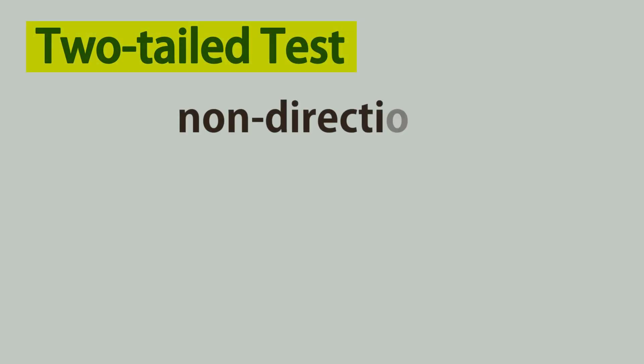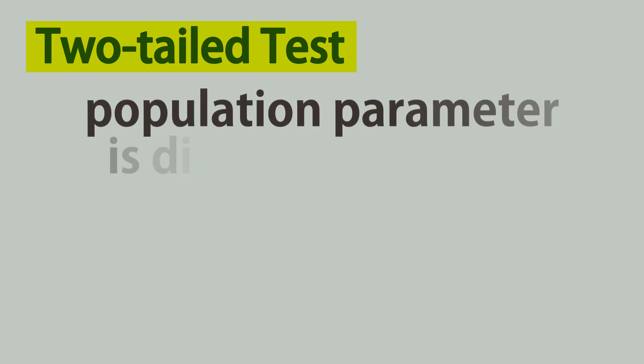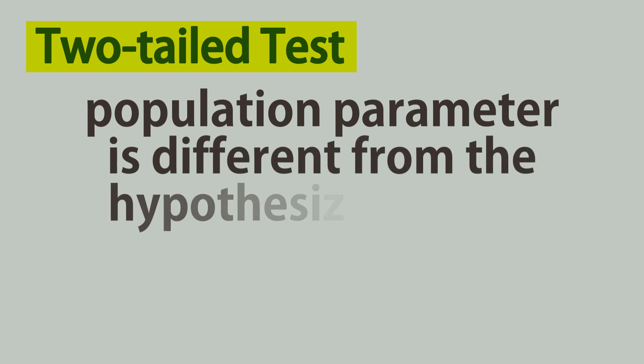Now, on the other hand, a two-tailed test is non-directional. That is, it does not commit to only one direction. It is used when the research hypothesis specifies that the population parameter is different from the hypothesized value. In essence, the parameter is either greater than or less than the hypothesized value.